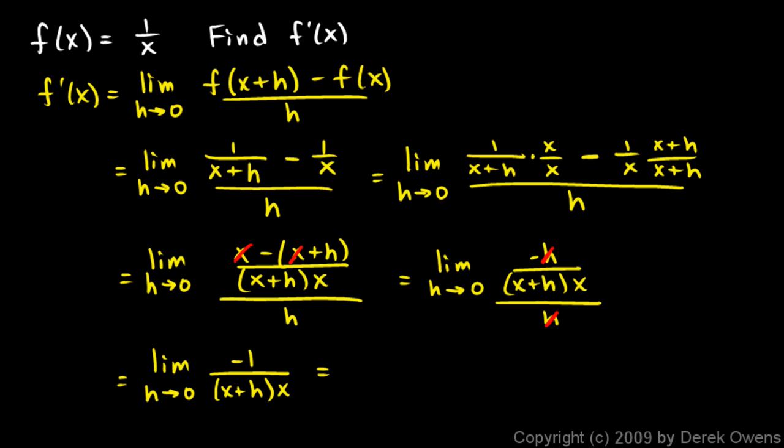So we have the limit as h approaches 0 of negative 1 over x plus h times x. And we can take the limit here. We can let h go to 0. That's what we're doing. We let h go to 0 and we're left with negative 1 over x squared. And that's our answer.